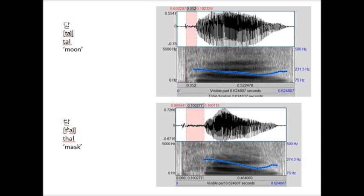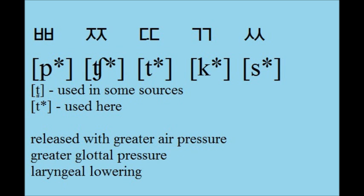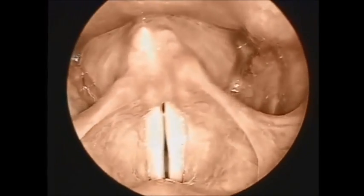Compare the spectrograms for the words 'tal' and 'tal'. Notice the short aspiration for the plain consonant and the long aspiration for the aspirated consonant. Notice also that the vowel following the aspirated consonant is much higher in pitch — 274 Hz compared to 231 Hz. The fortis consonants have been tricky to define in precise phonetic detail, partly because it is difficult to see exactly what the glottis is doing during speech. Nevertheless, we do know that the Korean fortis consonants are released with greater air pressure than the plain or aspirated consonants, and they also involve increased glottal pressure, though the precise details are still a matter of ongoing research.